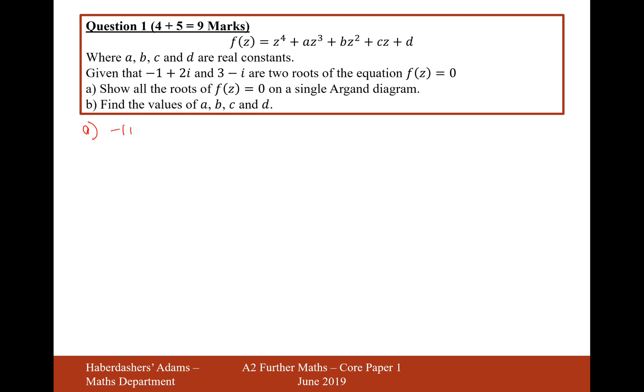if we have -1+2i as a root, then the complex conjugate must also be a root, so -1-2i is a root. And if 3-i is a root, for the exact same reason, the complex conjugate is also a root: 3+i.